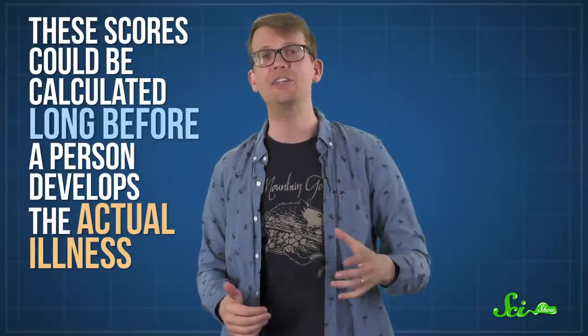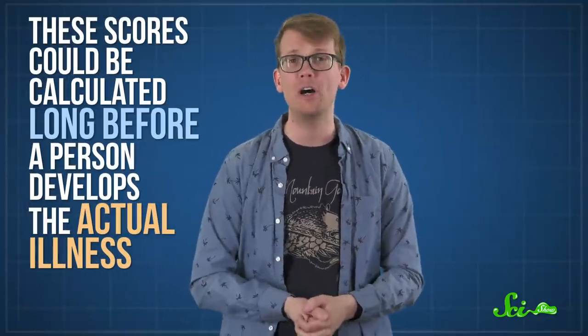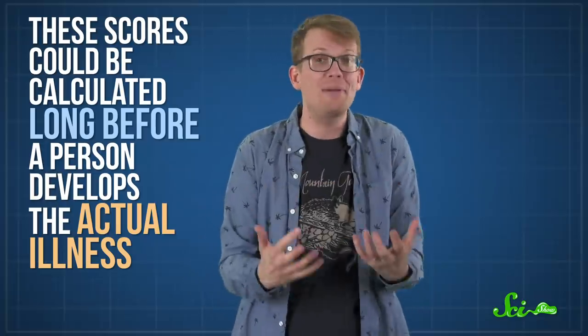Or consider another 2018 study, which calculated a polygenic risk score for aggressive prostate cancer. In that study, the polygenic risk score outperformed family history and widely used screening tests in predicting who would develop prostate cancer and at what age. Point is, these scores could be calculated long before a person develops the actual illness, maybe even at birth.